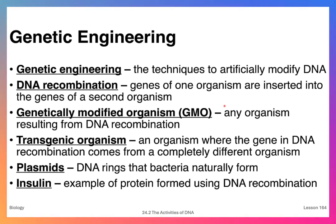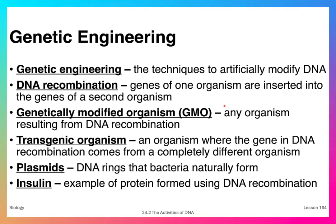What they ended up doing was taking the specific gene for insulin production from a human and inserting it into bacteria through a transgenic or DNA recombination process. These bacteria would then produce human insulin, and because it was human insulin, it did not cause the immunologic response. This kind of genetic recombination was critical for the production of many proteins used as medicines — insulin and growth hormone are two examples.